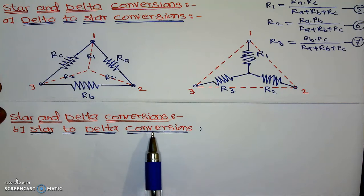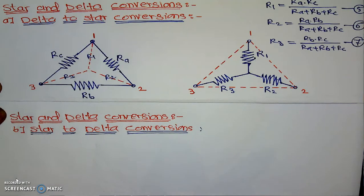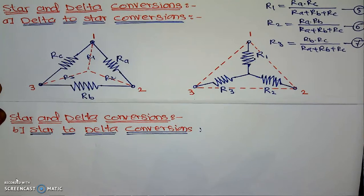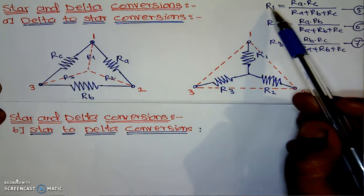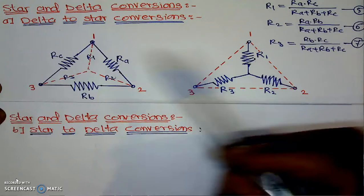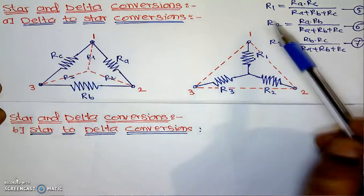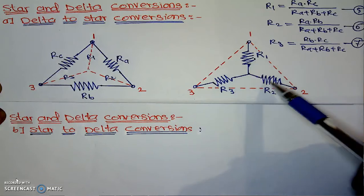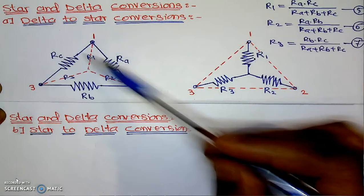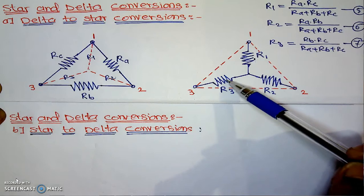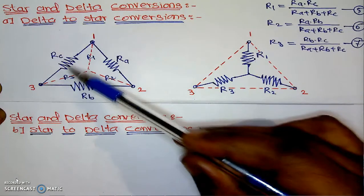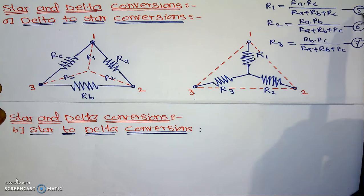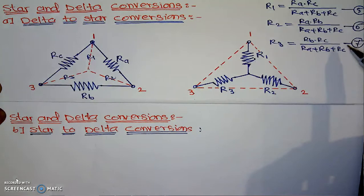In the previous video, we have seen how to do delta to star conversions. Using the equations developed in the previous section: R1 equals Ra into Rc divided by the summation of all; R2 equals Ra into Rb divided by summation of all; and R3 equals Rb into Rc divided by summation of all — written as equations number 5, 6, and 7.